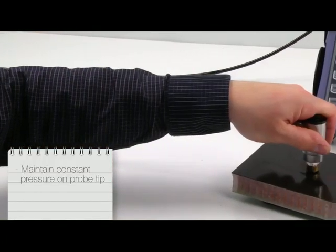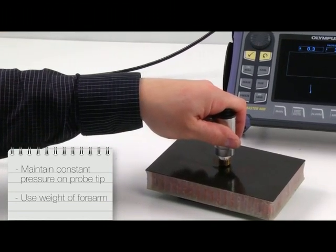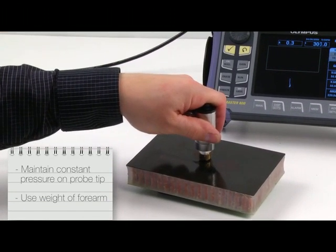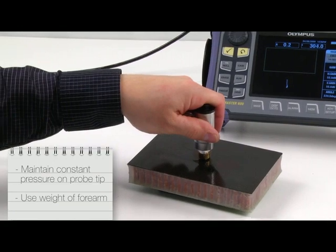Maintain a constant pressure on the probe tip. One easy way to keep the pressure constant is to use the weight of your forearm to press the probe against the surface. This helps ensure constant pressure and minimal effort.